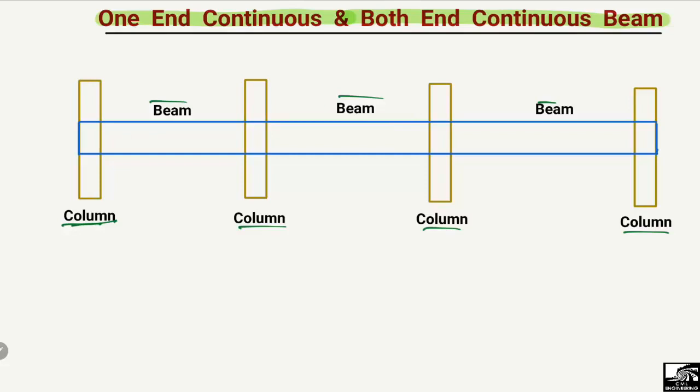So how can we differentiate that this is a one-end continuous beam or a both-end continuous beam? There is a very simple differentiation between these two types of beam. First, I will discuss the one-end continuous beam: if the beam is continuous only on one end, then this type of beam will be known as the one-end continuous beam.